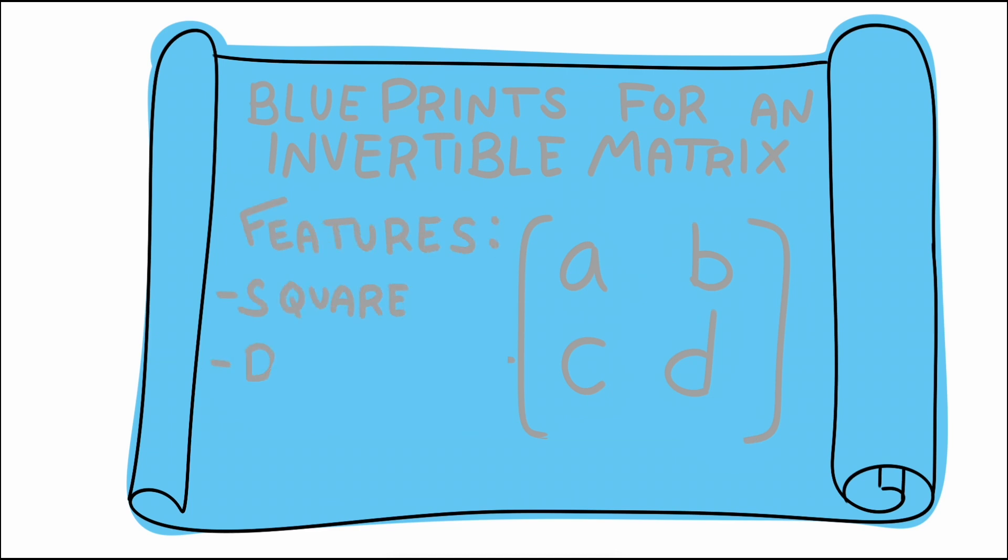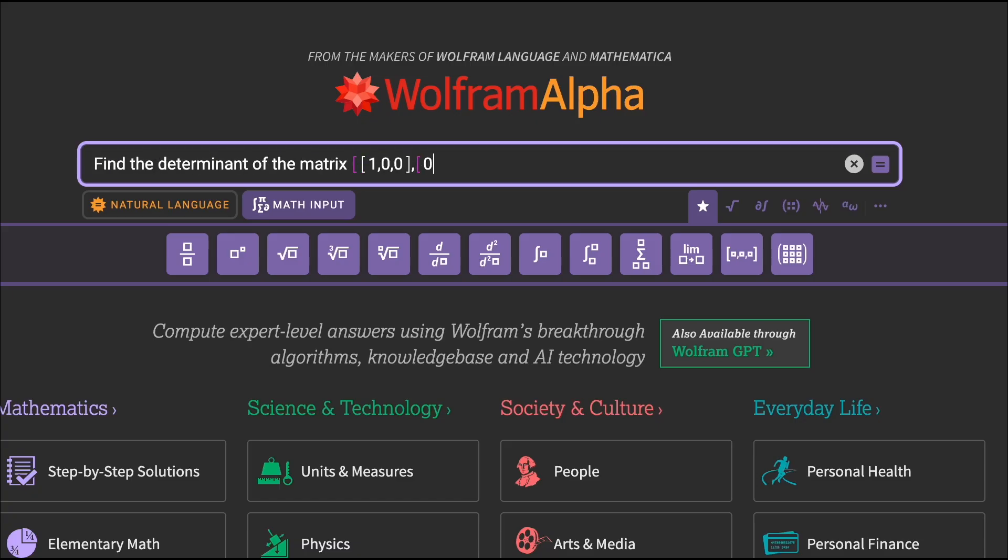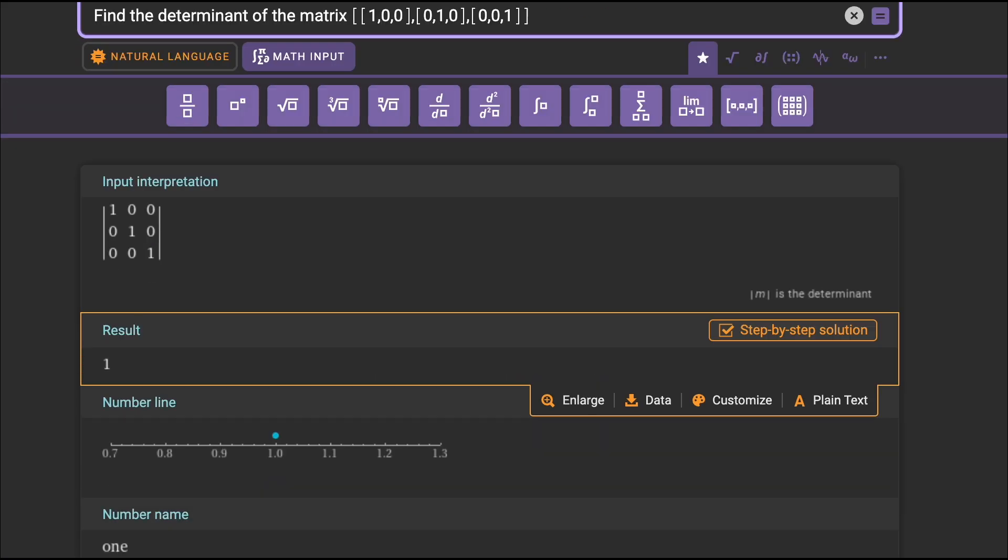Then we can check the invertibility of a matrix by checking its determinant isn't zero. We won't take time to explain about the meaning of the determinant in this video but keep an eye out for our future linear algebra videos.